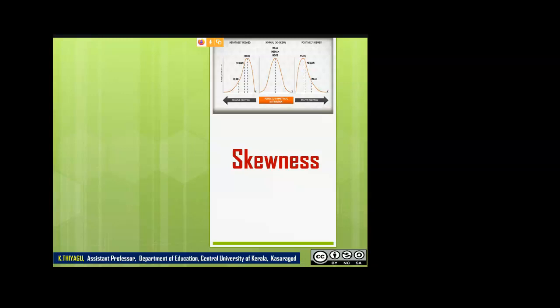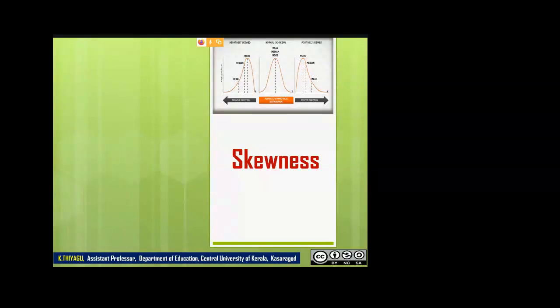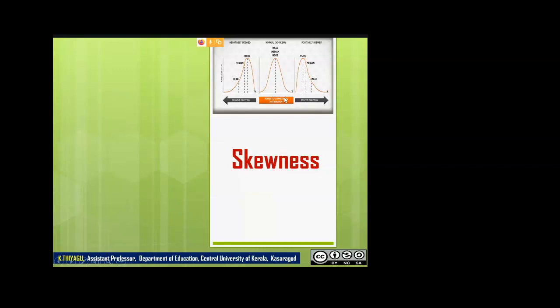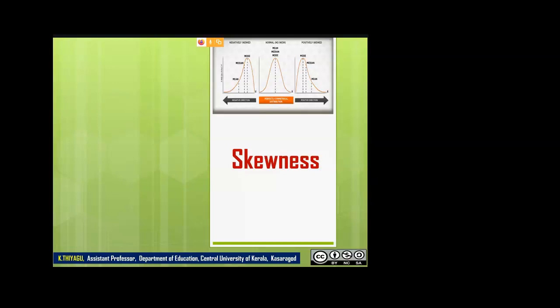Now I'm going to talk about skewness, which is the third property of normality. If you cut the normal curve in the center, you get two equal parts. But in a skewed curve, you cannot get two equal parts — this is the asymmetric nature. We are going to talk about two types: negative skewness and positive skewness.